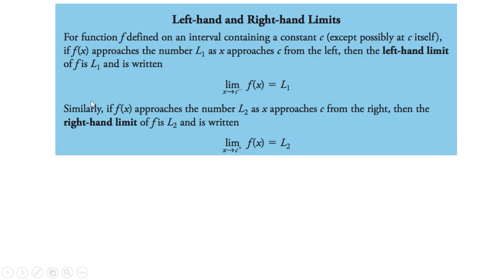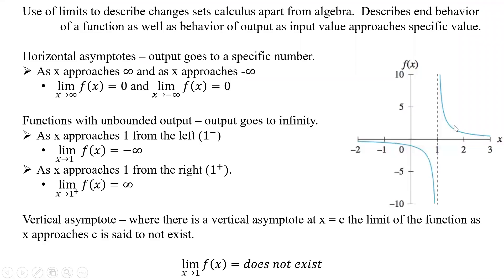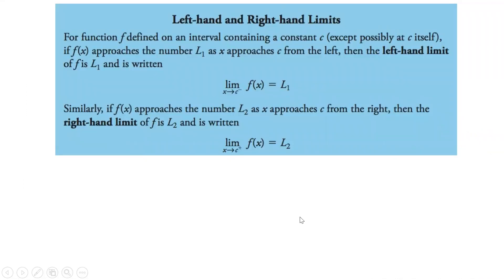Similarly, if f(x) approaches the number L2 as x approaches c from the right, then the right-hand limit of f is L2, written as the limit of f(x) as x approaches c from the right equals L2. In our case, L2 was positive infinity because it approached that from the right, whereas from the left it went to negative infinity.